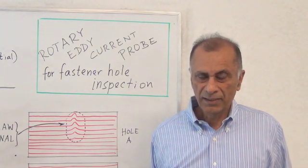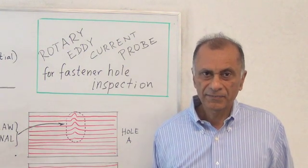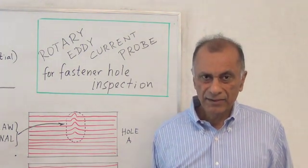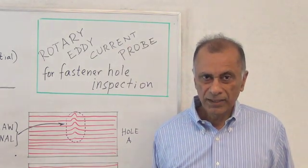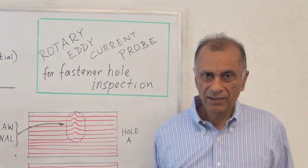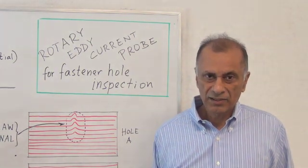The inspection is performed inside the holes to look for any cracking. The technique used is eddy current testing, and the tool which is used is a rotary probe coil which is inserted inside the holes and the inspection is performed.